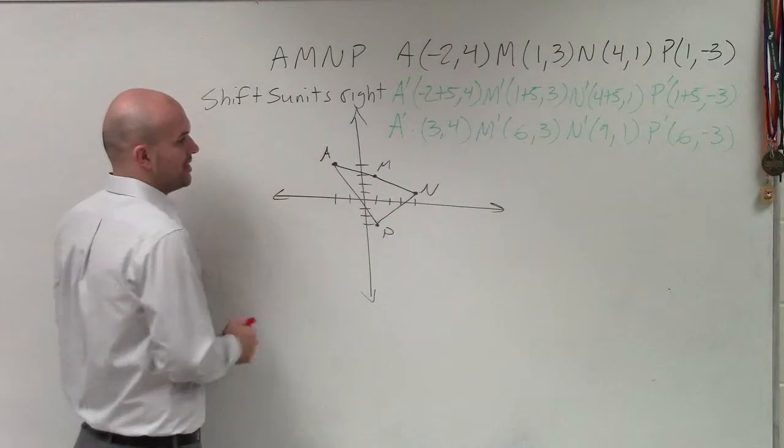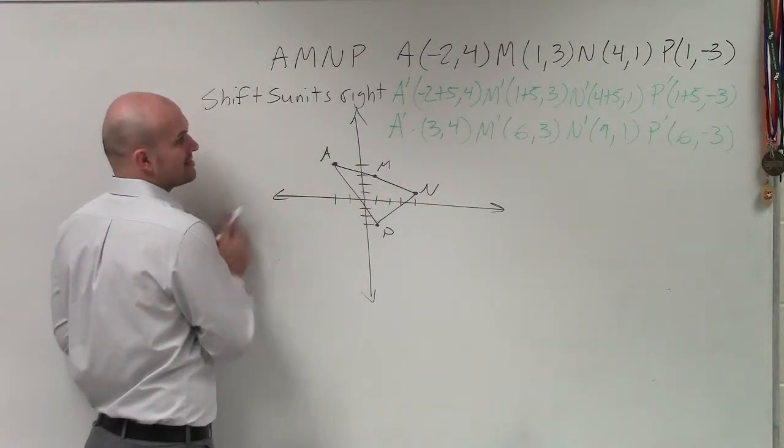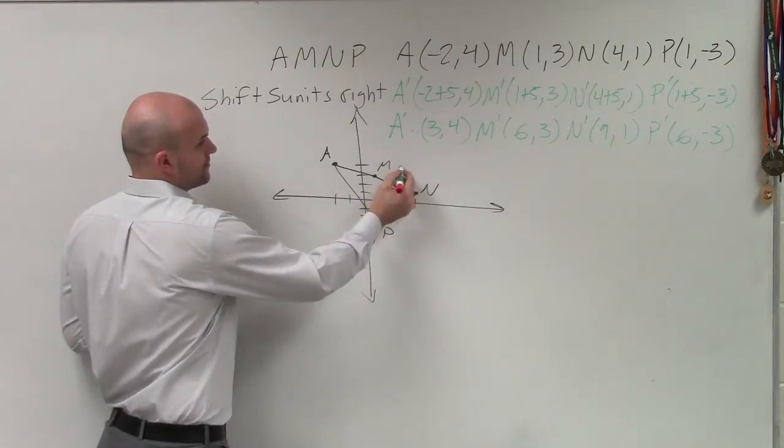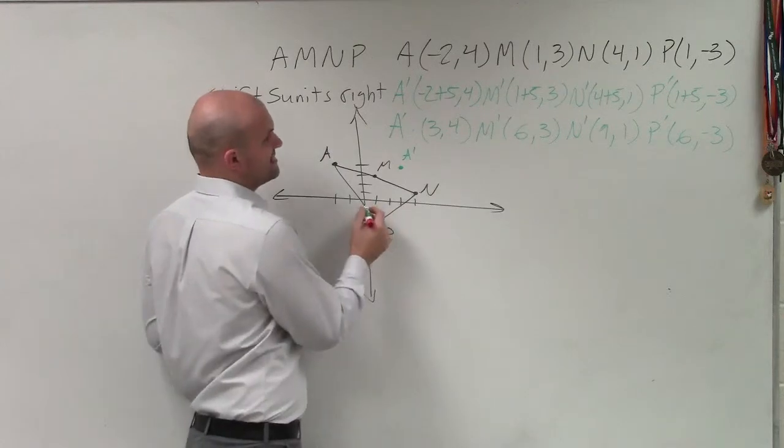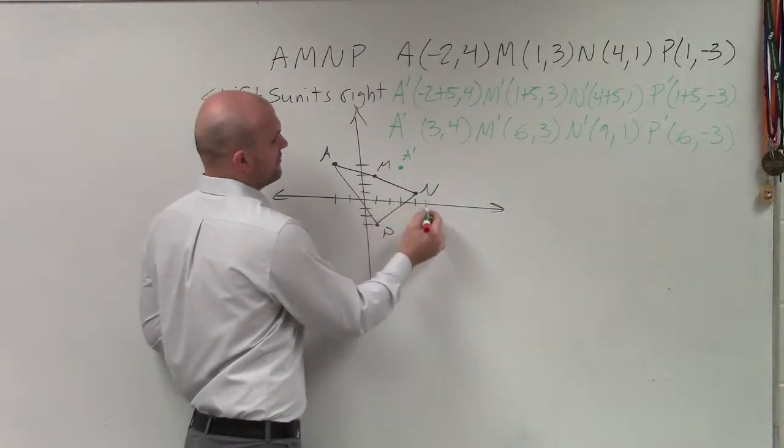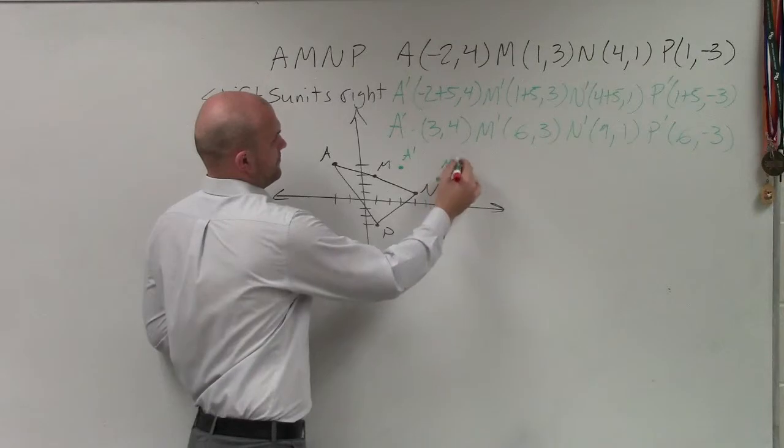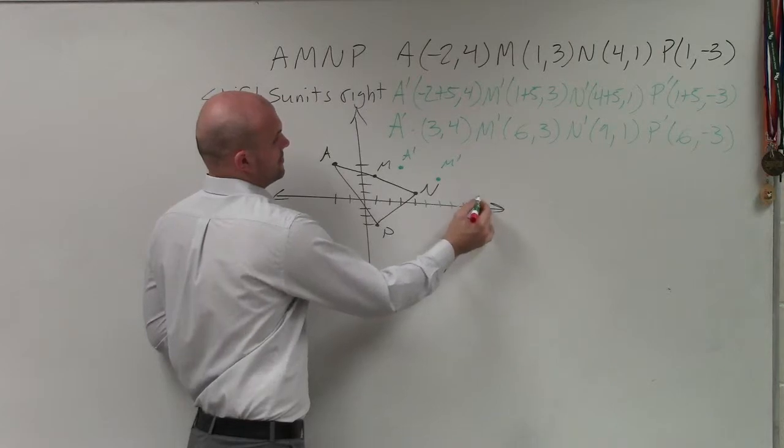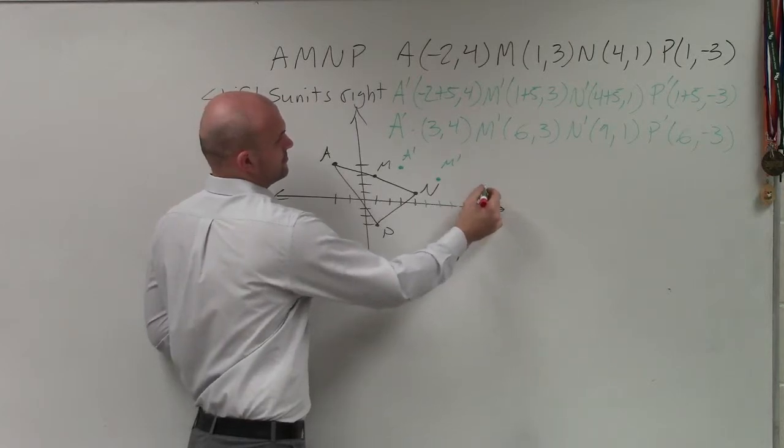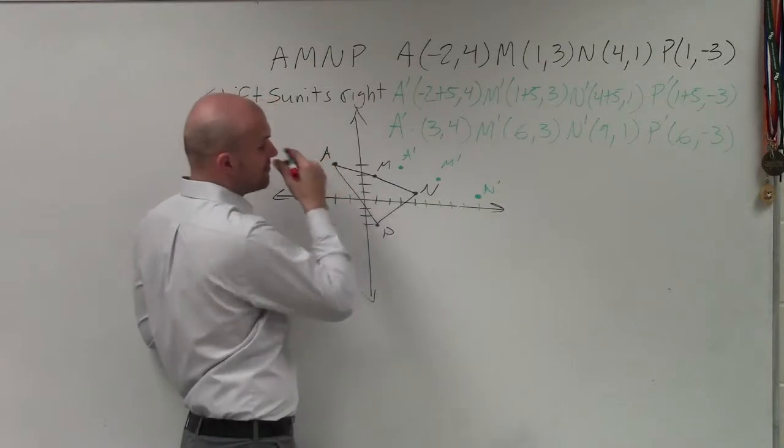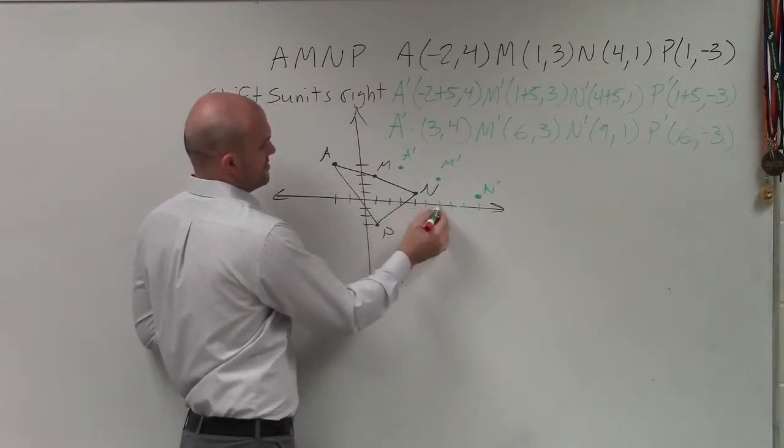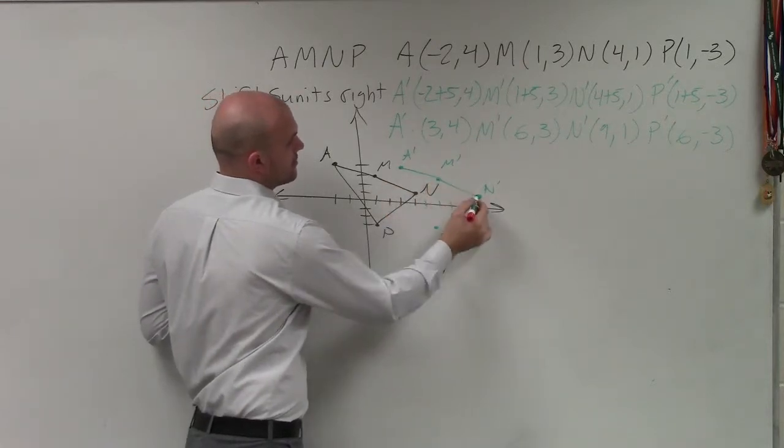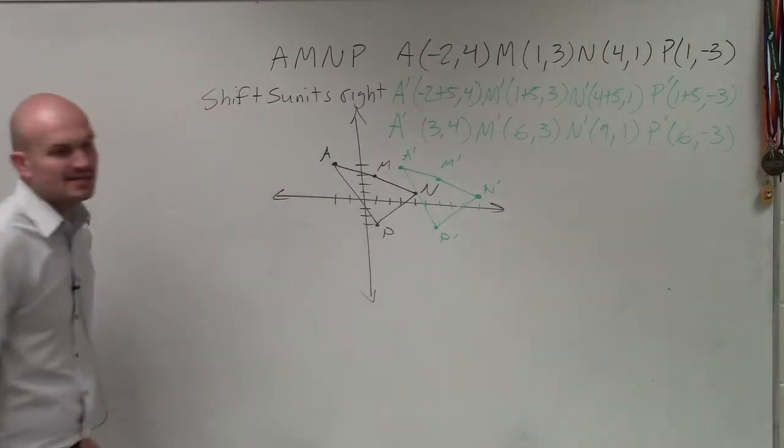So let's go and take a look at what this would look like. If I shifted this graph over 5 units to the right, A prime would be at 3 up 4. M prime would be at 6, 3. N prime would be at 9, 1. And P prime would be at 6, negative 3. So do you guys see how that works?